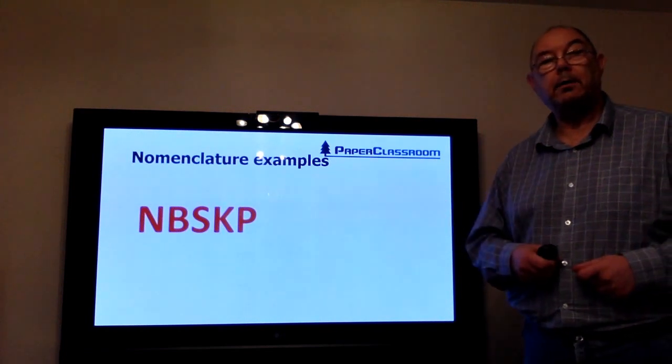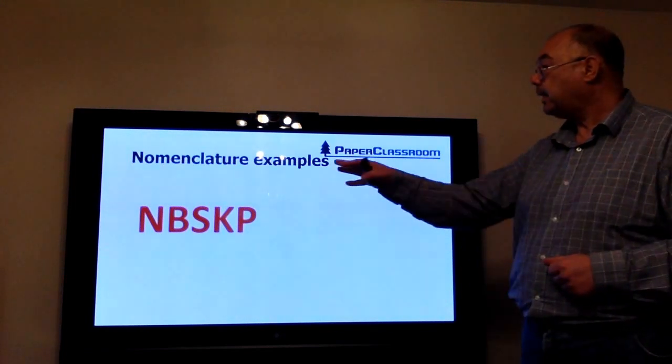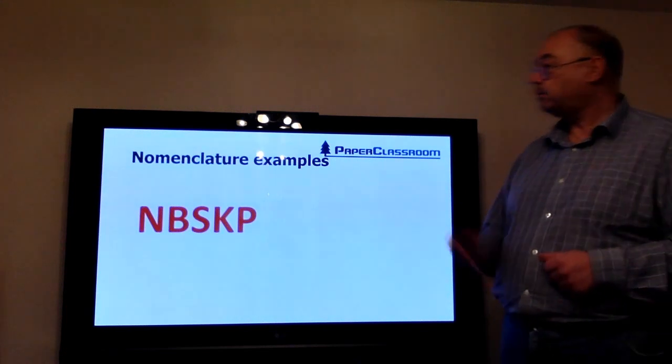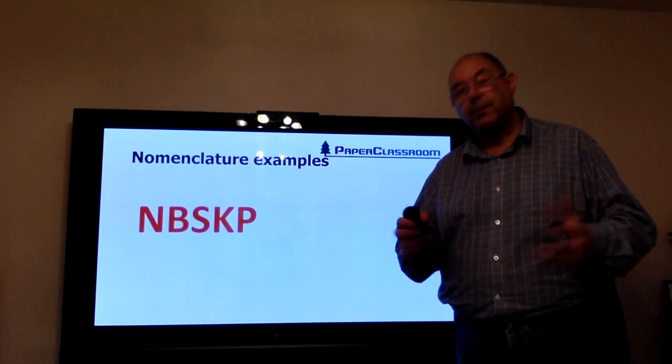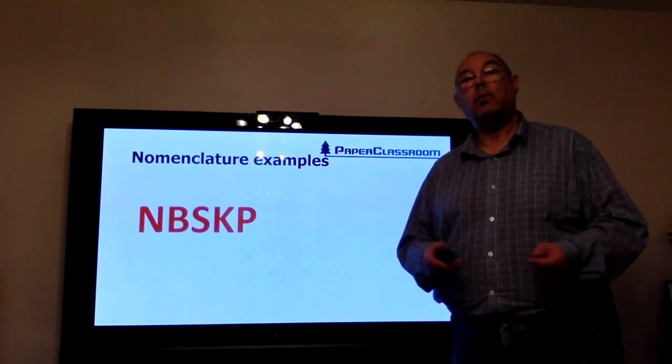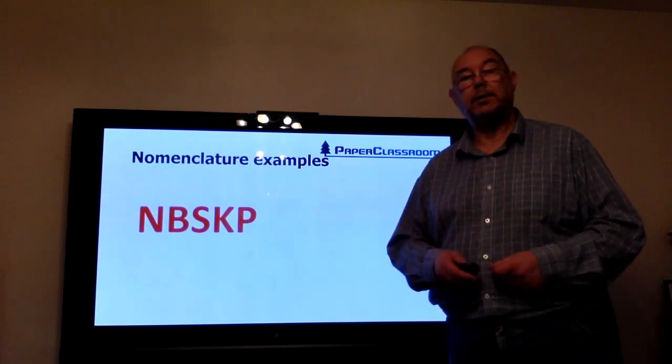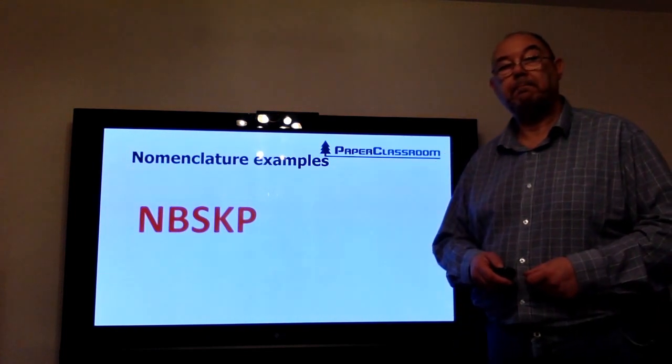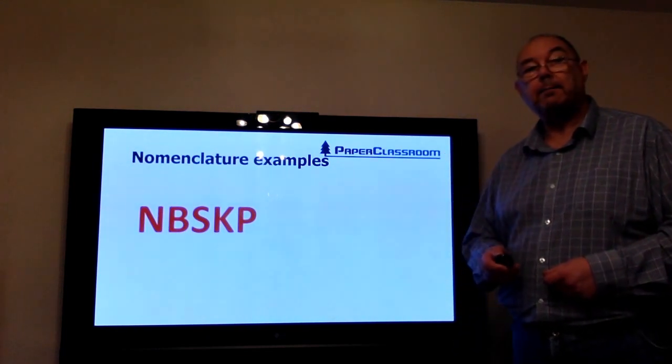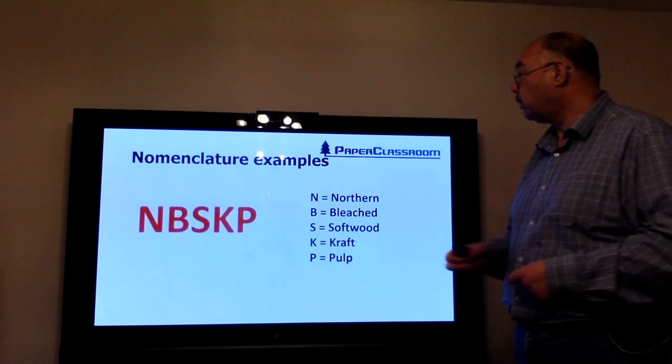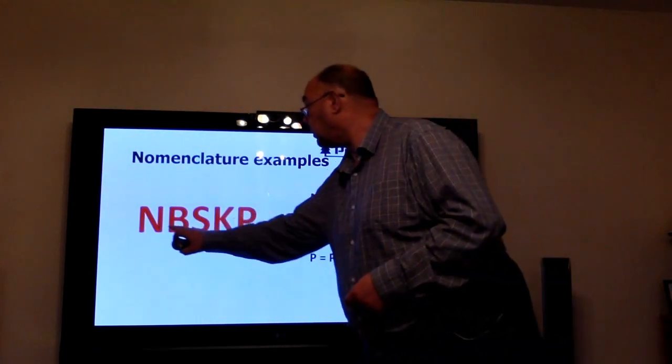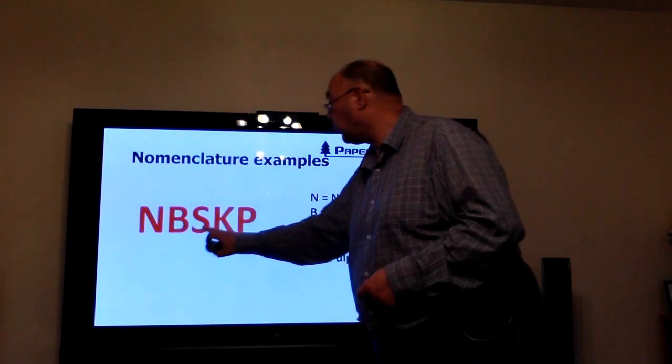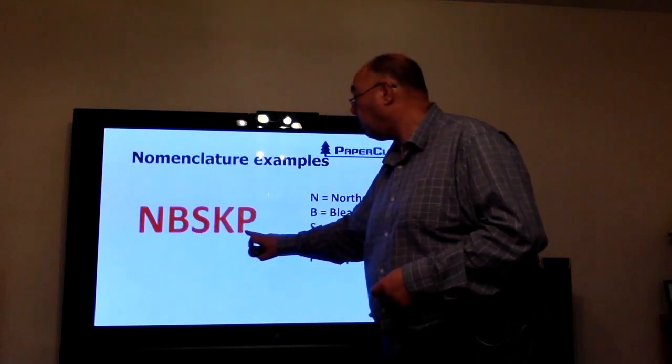Here are some nomenclature examples. NBSKP—what does that stand for? Just pause the video, have a think for a moment. When you're ready, press continue and we'll see how you're doing. Okay, welcome back. There we go: N, northern; B, bleached; S, softwood; K, kraft; P, pulp. Northern bleached softwood kraft pulp.